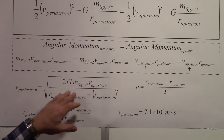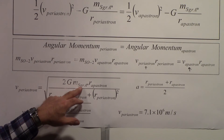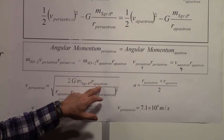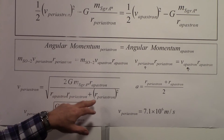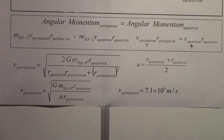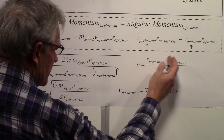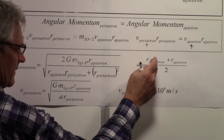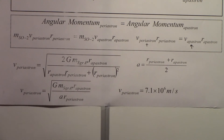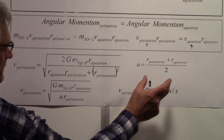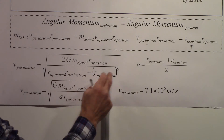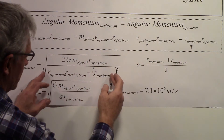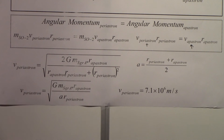The velocity at periastron equals the square root of: 2 times the gravitational constant times the mass of Sagittarius A* times the apastron distance, divided by the quantity (apastron distance times periastron distance plus periastron squared). Noting that the semi-major axis A equals the sum of the two distances divided by two — so that sum equals 2A — we substitute that in, factor out periastron, and arrive at a clean expression for the periastron velocity using these known parameters.